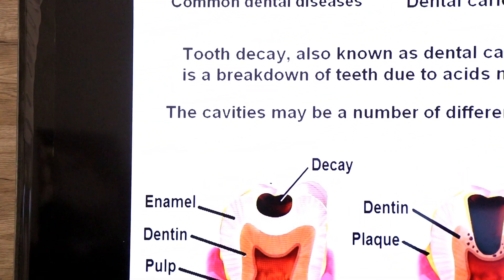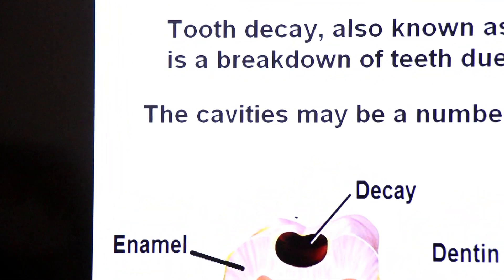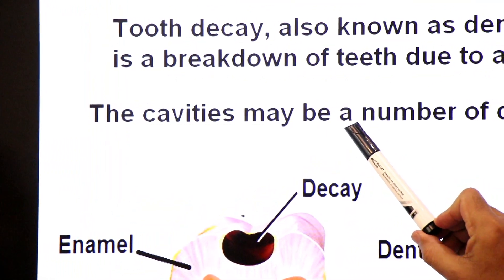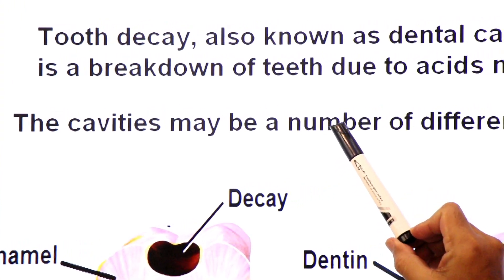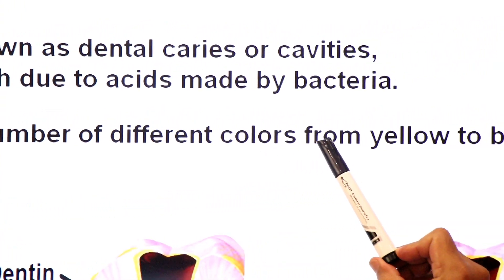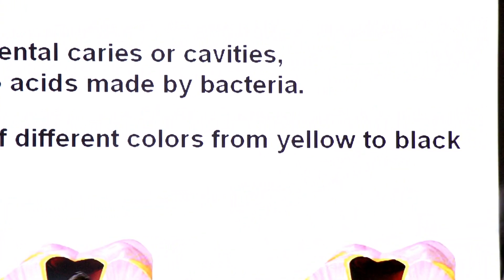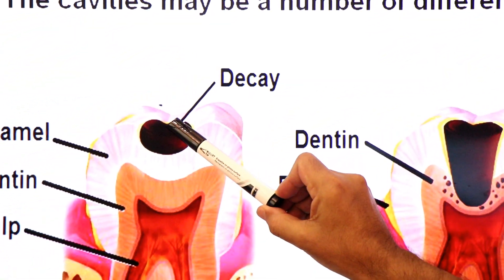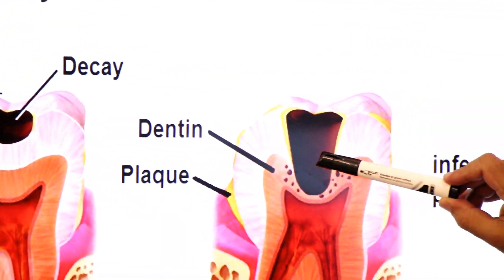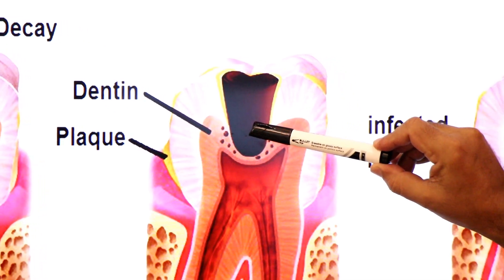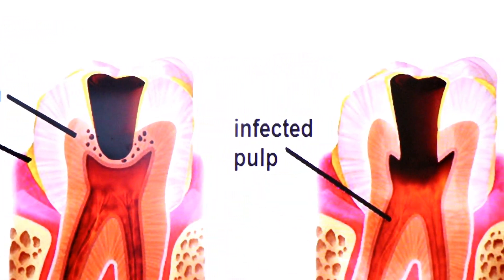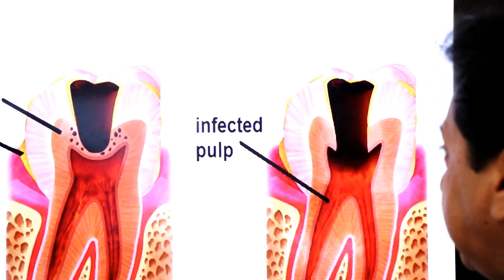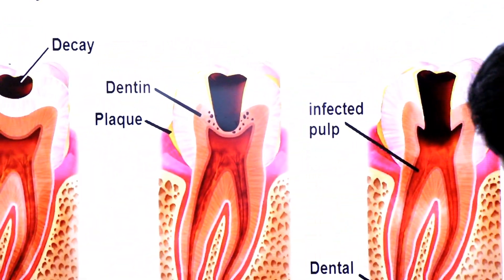Aur dear students, in cavities ka color variable hota hai. The cavities may be a number of different colors, from yellow to black. Toh pehle yeh cavity banegi enamel mein, uske baad progress karegi dentin mein, aur uske baad soft tissue pulp bhi infected hoga. Yeh stages mein yeh disease barhti hai.